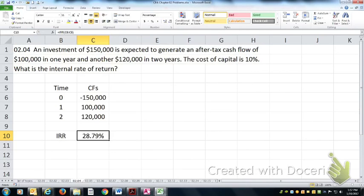The problem gives you the cost of capital, but the cost of capital is immaterial when we're calculating the internal rate of return.